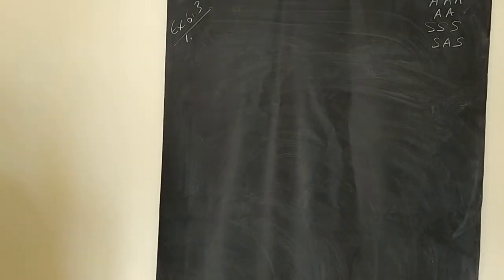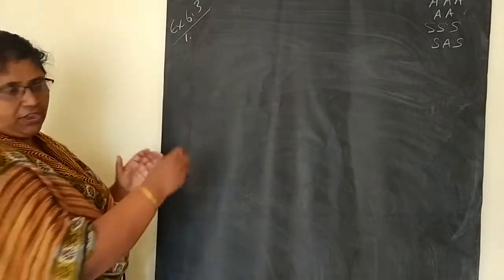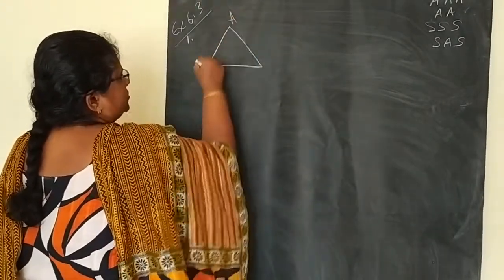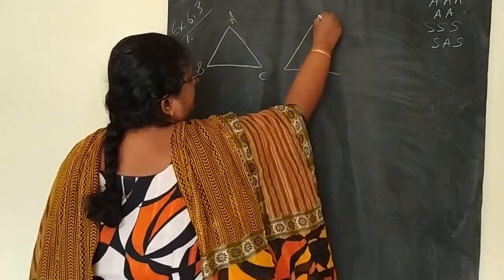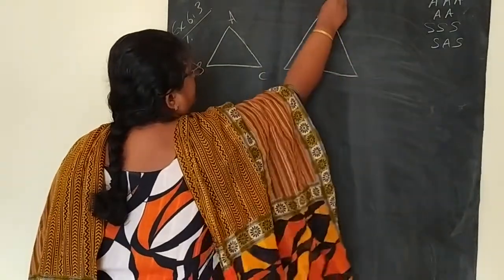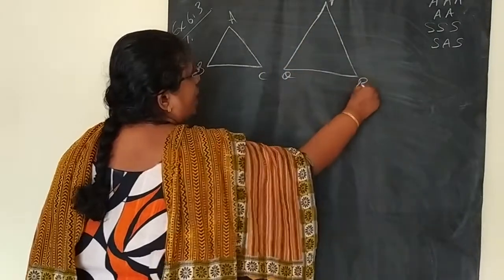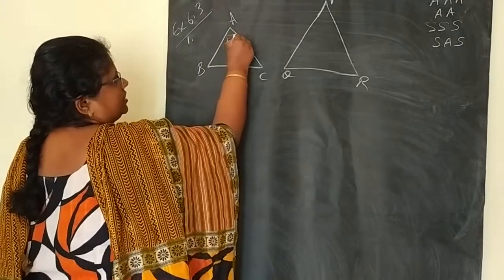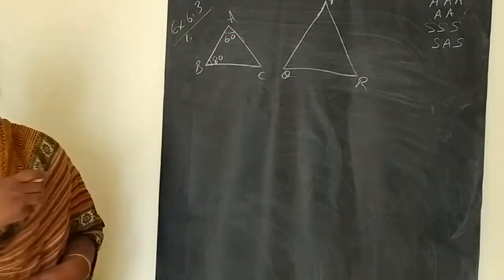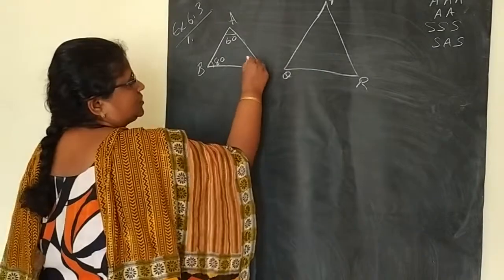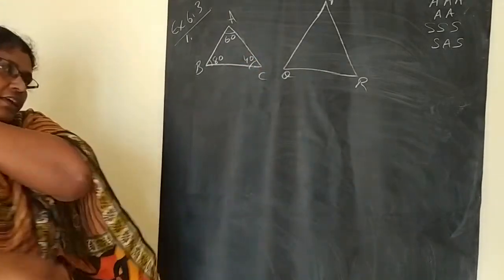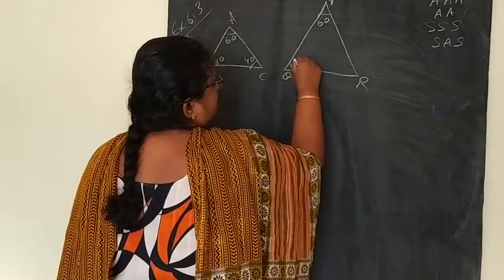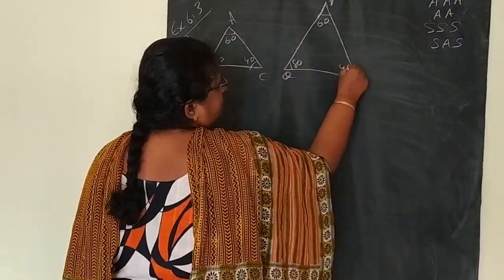First question: two triangles are given. First triangle ABC and next triangle is PQR. In these two triangles, the measures are given. In triangle ABC it is 60, 80, and 40. In triangle PQR it is 60, 70, and 40.